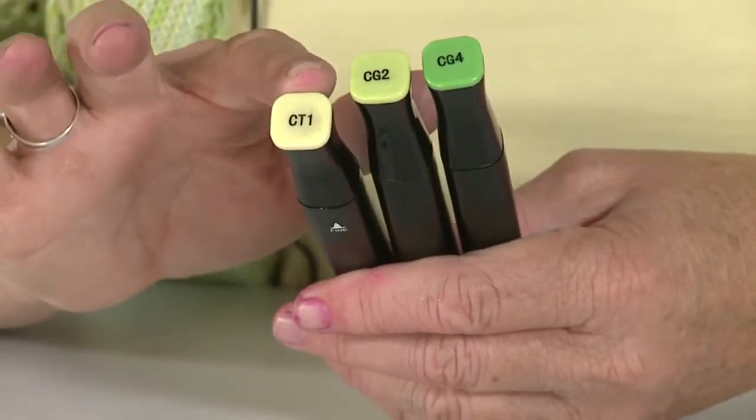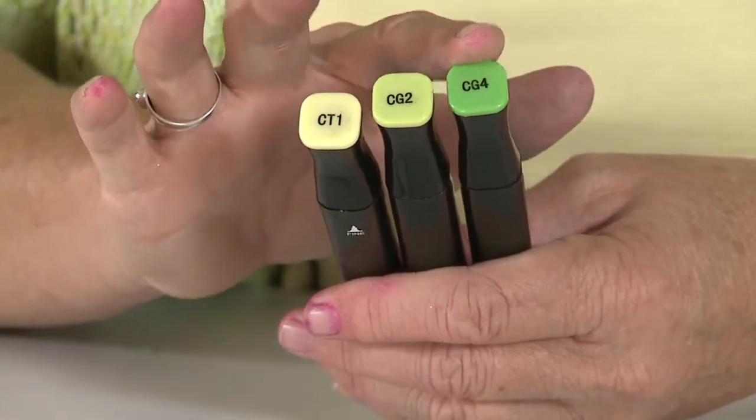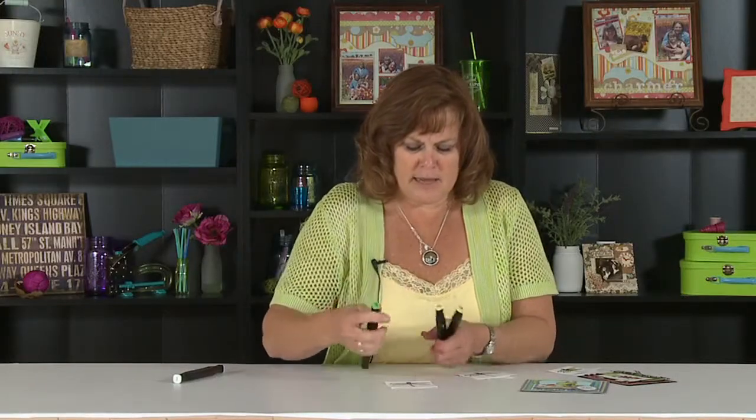So if I color this color on top of one of the darker colors, it's going to dilute the color. So let's take a peek at that.